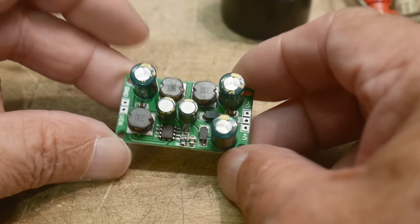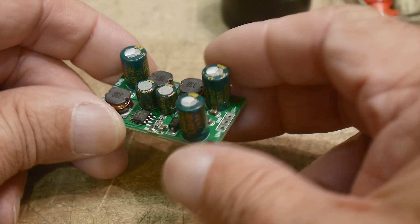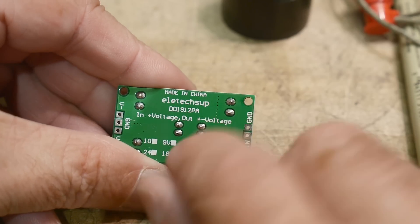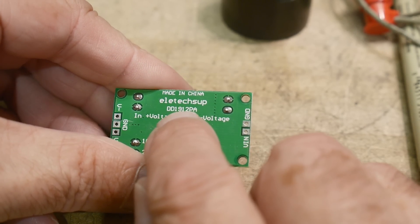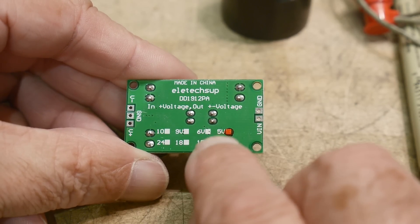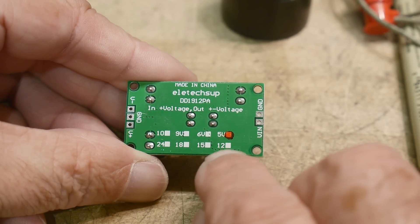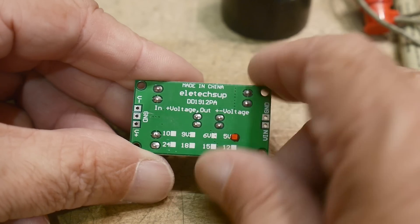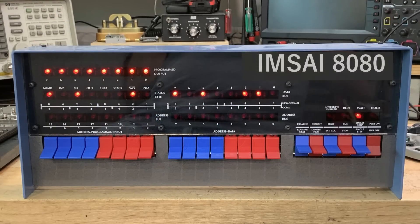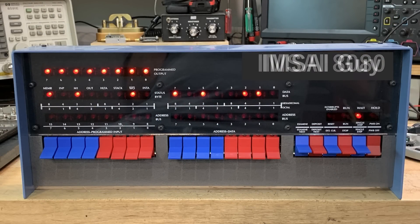Alright, that was thing of the day. 5 volts in, plus or minus 13.6 out, and this is a DD1912PA. Comes in lots of different versions: 5, 6, 9, 10, 12, 15, 18, and 24. There you go.